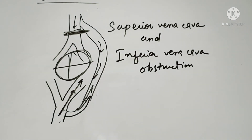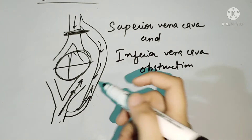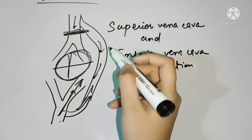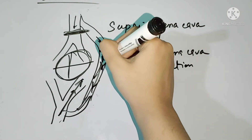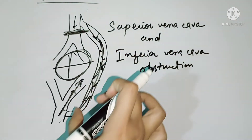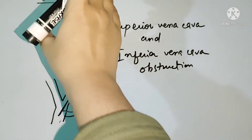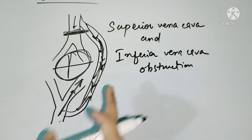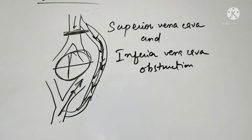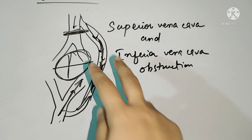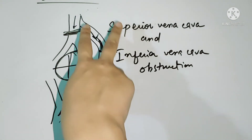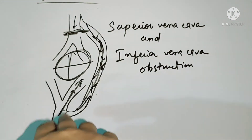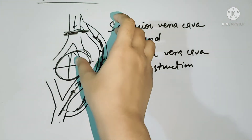In superior vena cava obstruction, the blood direction in the abdominal wall veins is from above downwards. All the venous flow redirects toward the inferior vena cava. The abdominal wall veins dilate and blood flows downward through them, which is the key clinical sign to differentiate superior vena cava obstruction.